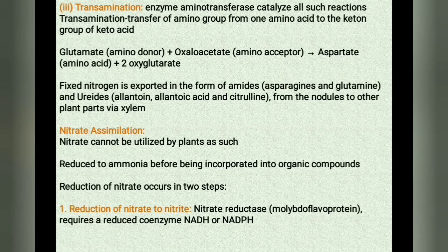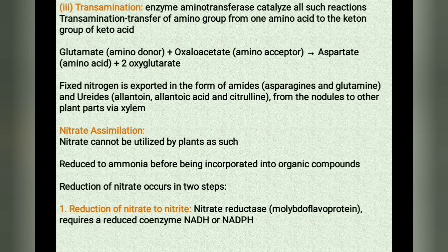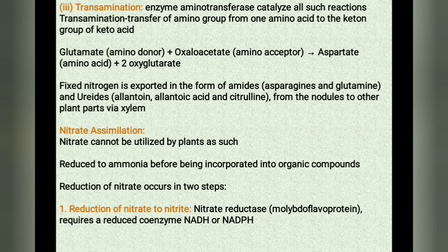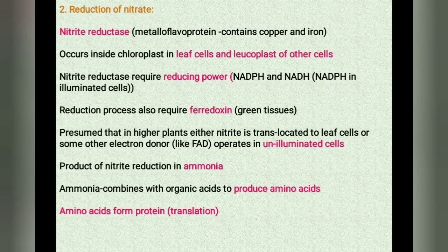Next is nitrate assimilation. Nitrate cannot be utilized by plants as such. It must first be reduced to ammonia before being incorporated into organic compounds. The reduction of nitrate occurs in two steps. The first step is the reduction of nitrate to nitrite, carried out by the inducible enzyme nitrate reductase. This enzyme is a molybdoflavoprotein that requires reduced coenzyme like NADH or NADPH for its activity, brought in contact with nitrate by FAD or FMN.